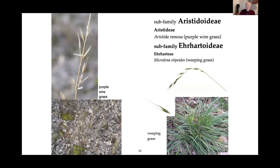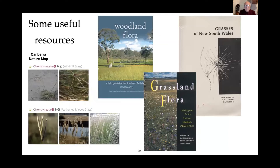There's a huge number of resources on grasses. One I'd recommend is Canberra Nature Map — if you go on there and look at grasses, they've got examples of all the grasses you'll find around here with different pictures so you can start to distinguish them. Friends of Grasslands has woodland flora and grassland flora with a lot of grass examples. And then the Bible is really the Grasses of New South Wales, but there are just lots of books and they're all pretty good.